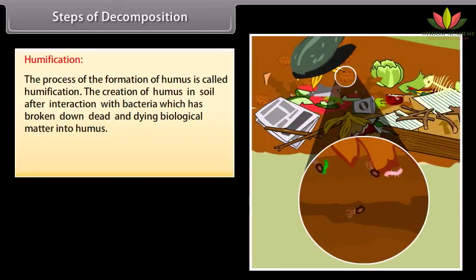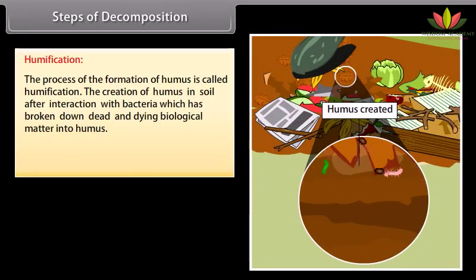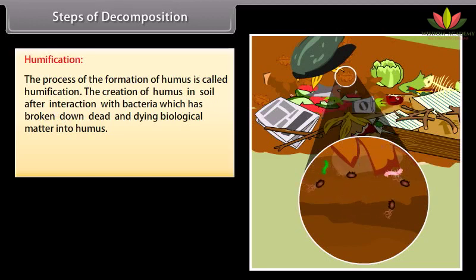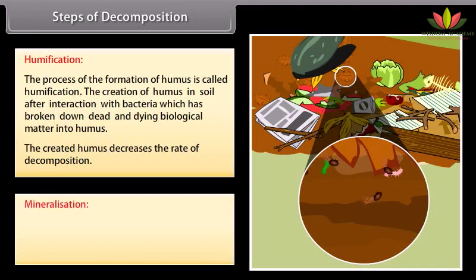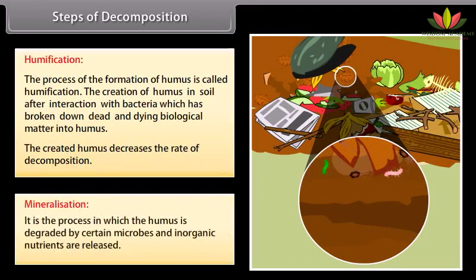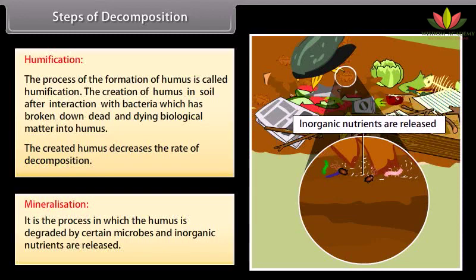Humification: the process of formation of humus is called humification. The creation of humus in soil after interaction with bacteria which has broken down dead and dying biological matter. The created humus decreases the rate of decomposition. Mineralization: the process in which the humus is degraded by certain microbes and inorganic nutrients are released.